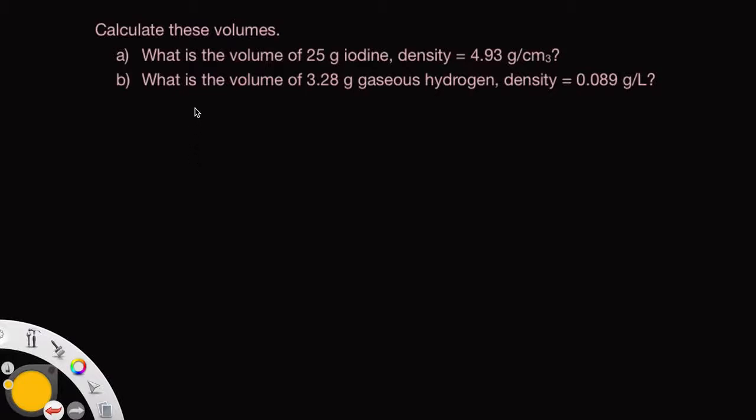All right, in this question we're dealing with density once again. In this first problem we're dealing with grams, and density is grams per cubic centimeter, so it looks fine. We have mass in grams and we have the units in cubic centimeters.